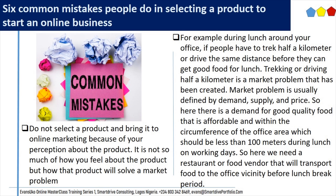For example, in a given office during lunch, if people have to trek half a kilometer or drive the same distance before they can get good food, trekking or driving half a kilometer is a market problem that has been created. Market problem is usually defined by demand, supply, and price. So here, there is a demand for good quality food that is affordable and within the circumference of the office area, less than 100 meters, during lunch on working days. What is needed is a restaurant or food vendor that will transport food to the office vicinity before the lunch break period.